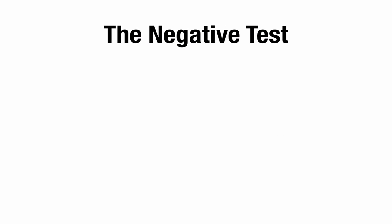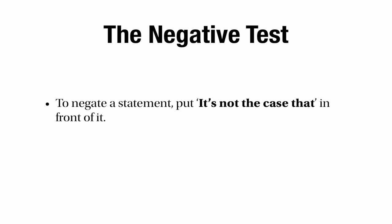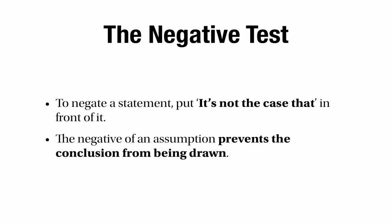There's actually a really good test to make sure whether something is assumed or not, and it's called the negative test. First of all, you negate a statement by writing 'it's not the case that' in front of it, or 'it's not true that' at the start. The negative test works like this: the negative of an assumption prevents the conclusion from being drawn — it ruins the argument. So if you take an assumption and you negate it, it destroys the argument, and that's how you know that the original thing was an assumption.